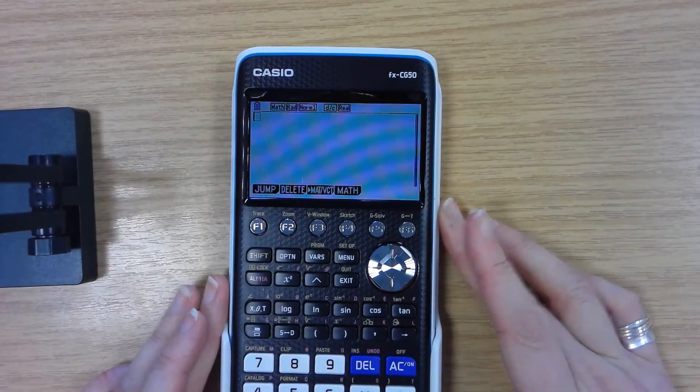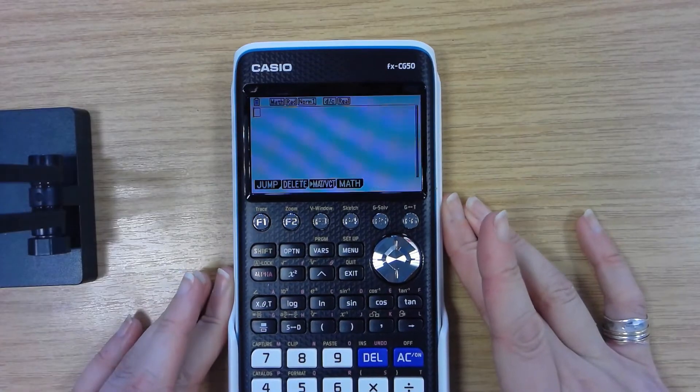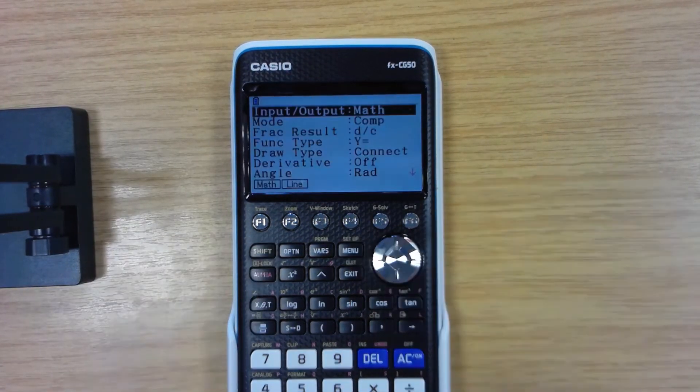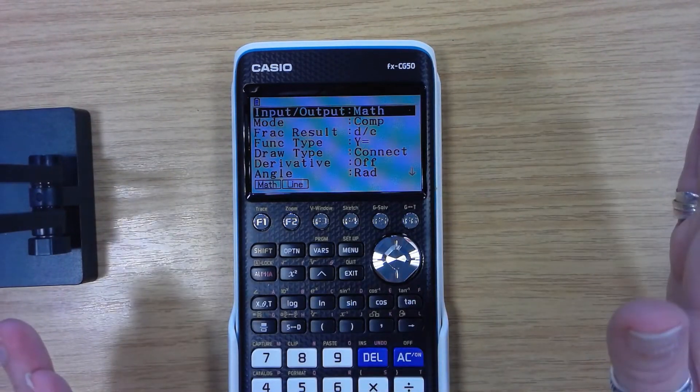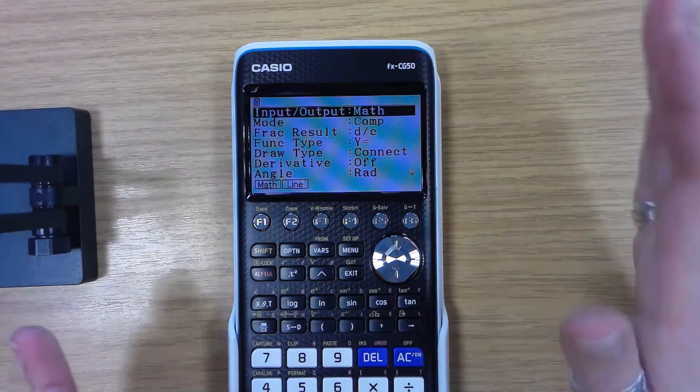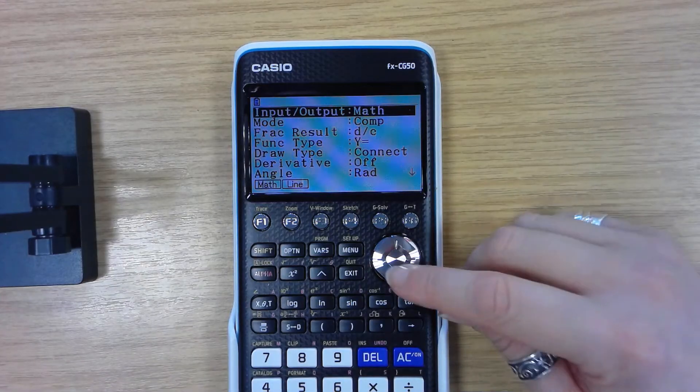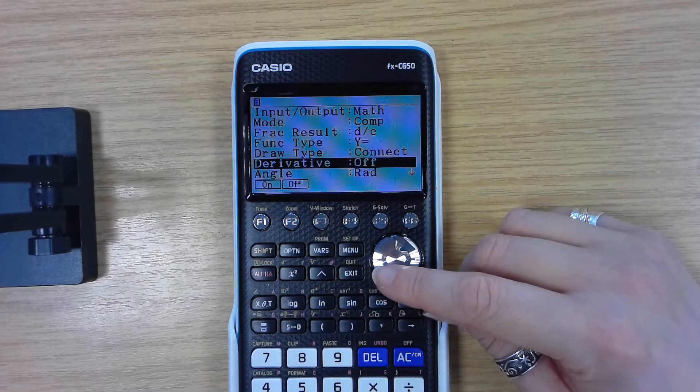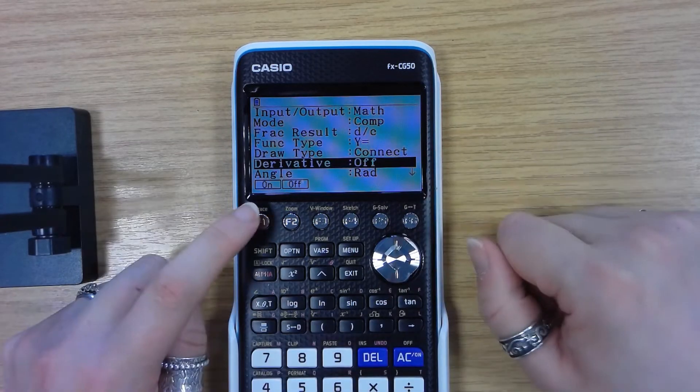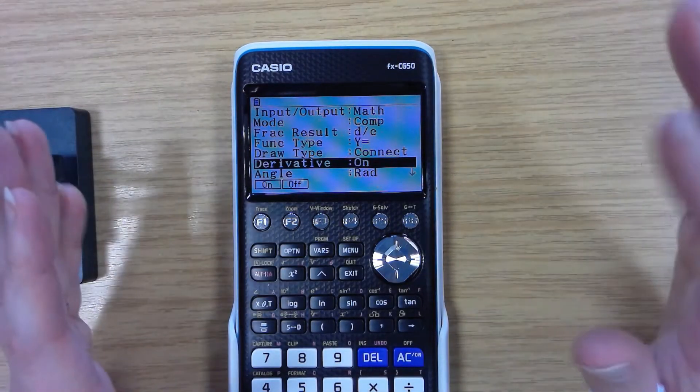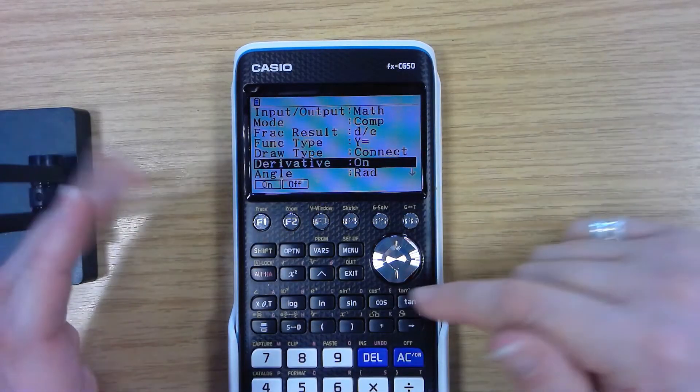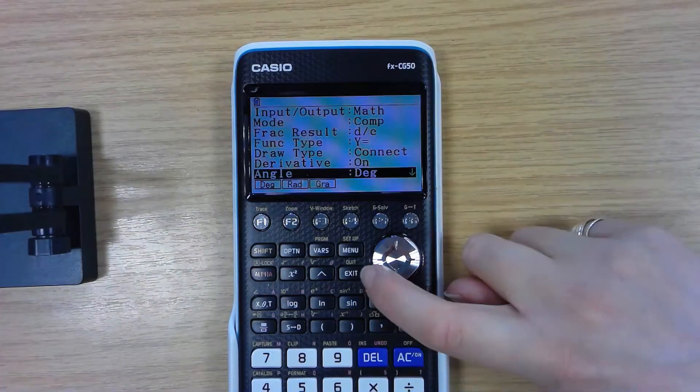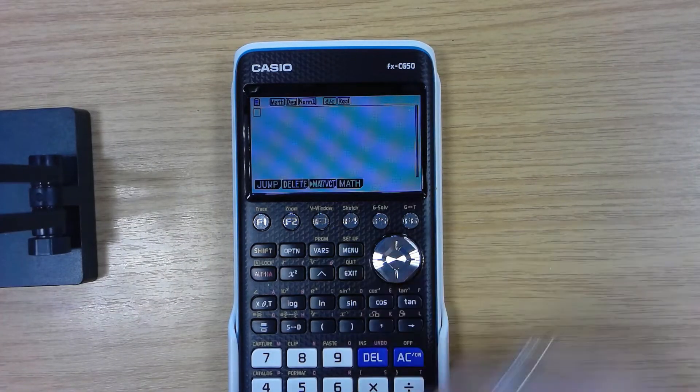For GCSE this is the way I like to set up my calculator. So once I'm in here I go shift setup and whenever I have a student who buys one of these calculators I go through this process with them there and then before they take it away. Scroll down. The only two things I like to change is I like to have the derivative on because it gives me more information when I'm sketching graphs about the gradient of it etc, and then angle change to degrees. Everything else is fine so I push the exit button to come out of there.